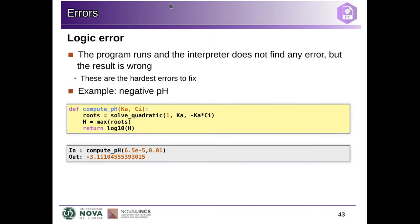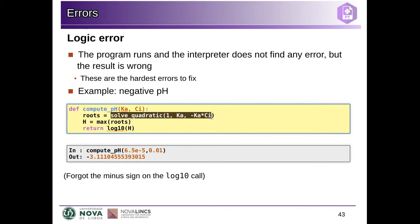Perhaps the worst error you can have is the logic error — this is an error where your program runs, nothing goes wrong, there are no error messages, but you get the wrong result. This is tricky because the interpreter cannot help you. For example, we compute pH and get a negative value — something went wrong. In this case it's simple: we just forgot the minus sign before the logarithm. But in other cases it could be complicated. This is why it's very important to unit test each function independently, so that when you find an error, you know it occurred in the last function you're working on.